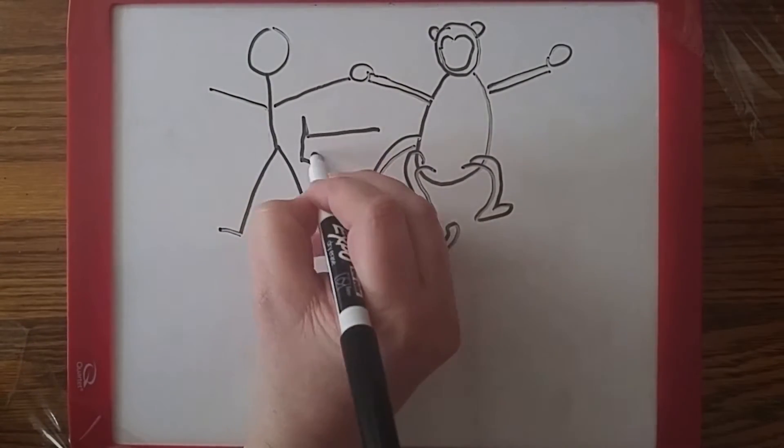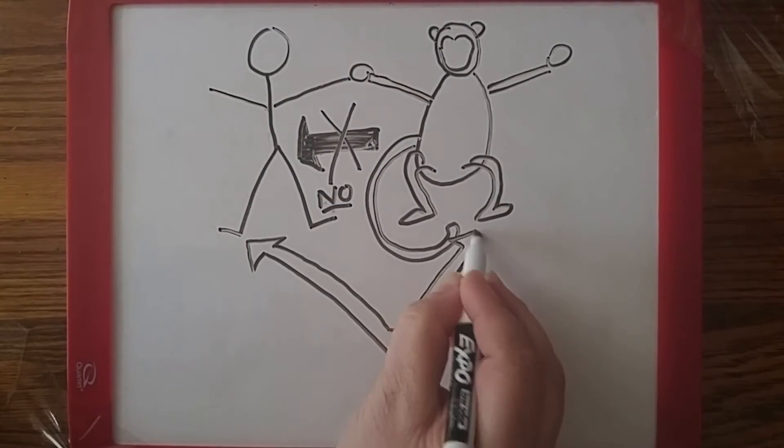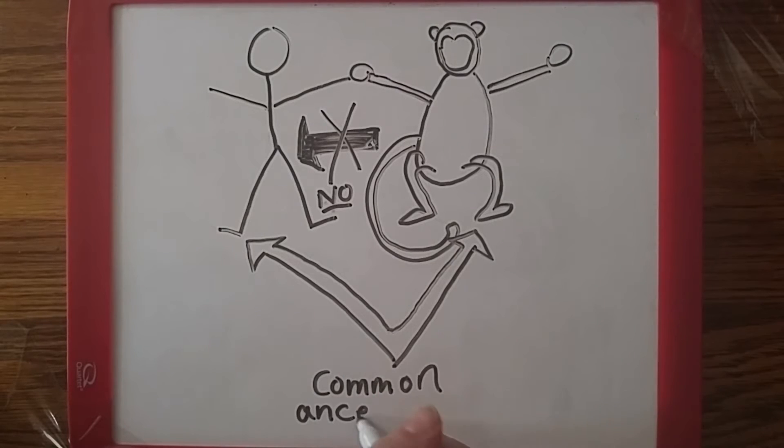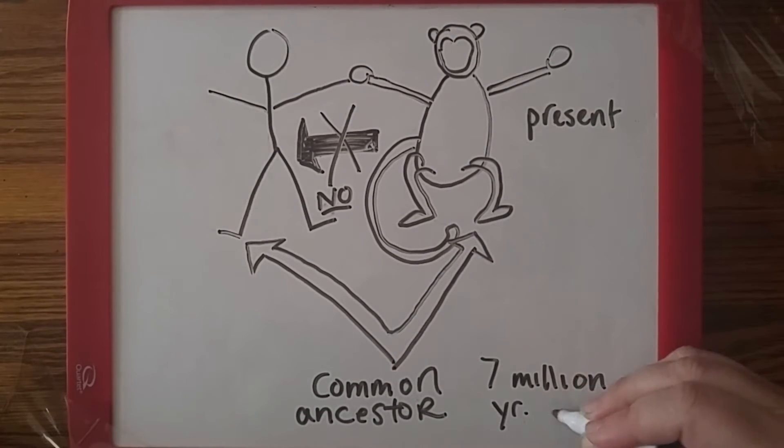Evolution predicts that all life on Earth shares a common ancestor, which of course includes humans and monkeys. At different points in time, each new species branched off from the original species, and we ended up with the diversity of life we see today.